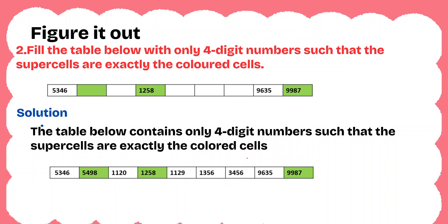Question 2: Fill the table below with only 4-digit numbers such that the supercells are exactly the colored cells. We fill this table with only 4-digit numbers. The green-colored cell should be a supercell, so we assign a number greater than 5346. The next number should not be a supercell and should be lesser than the adjacent number — for example, 1120, which is not a supercell. The remaining cells are filled so the last one is a supercell.